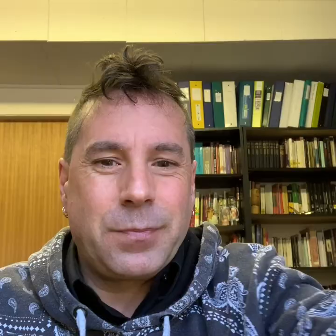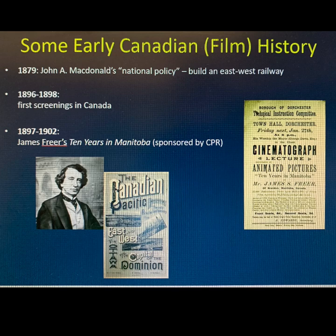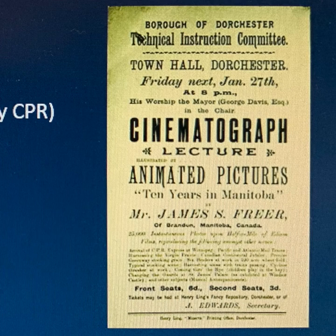Even though these first screenings were important, it's estimated that only about 70 Canadian feature films were produced during the first half of the 20th century — a statistic made even more troubling by the fact that what is defined as a feature film is difficult. The first Canadian films of even close to feature length were produced in the fall of 1897 by a Canadian filmmaker named James Freer, a Manitoba farmer, whose films depicted quite romantically life on the prairies.